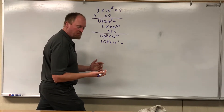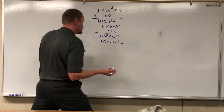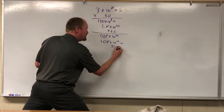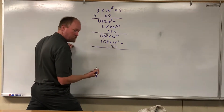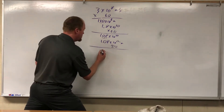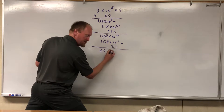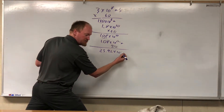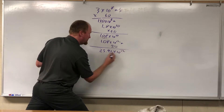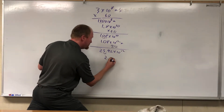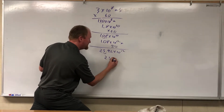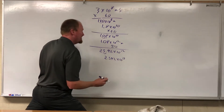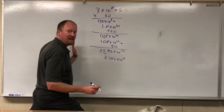Now let's go a little bit further. There are 24 hours in a day, so multiplying that together, I get 2.592 times 10 to the 13th meters. That would be a light day.